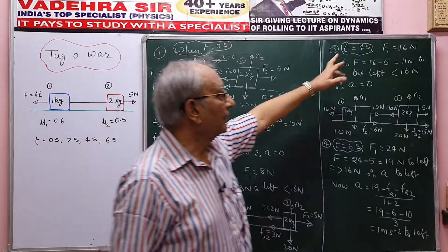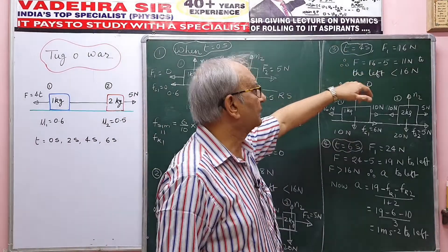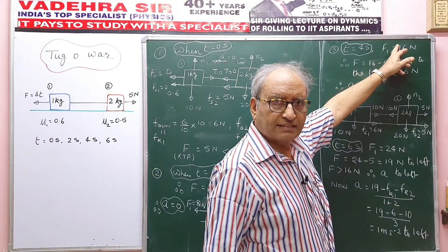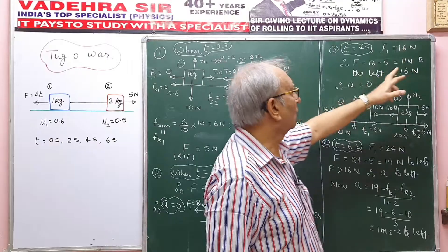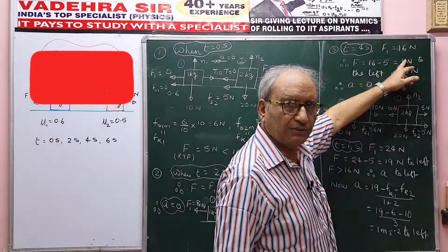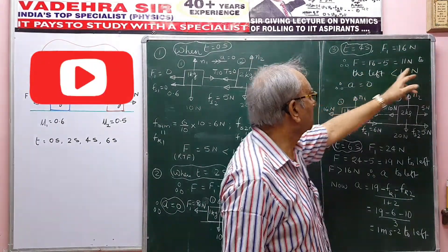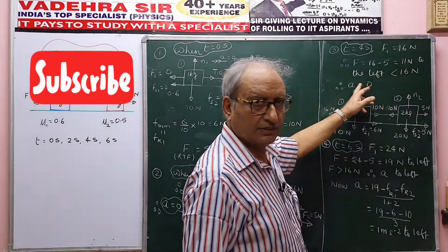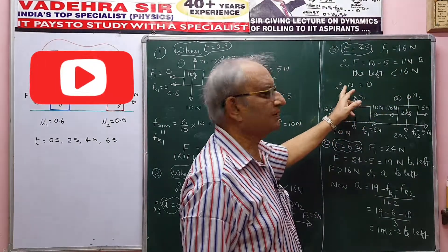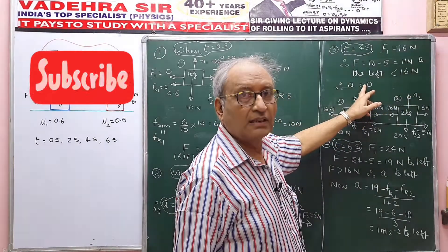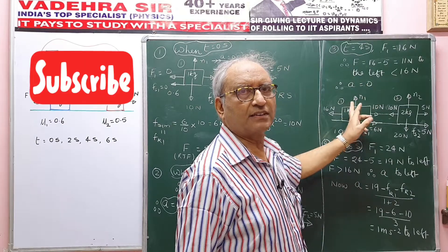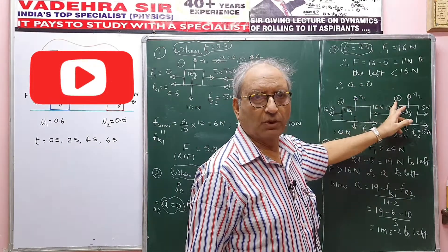When T is 4 seconds, F1 = 16 Newton. The resultant attracting force is 16 − 5 = 11 Newton to the left. But 11 Newton is still less than 16 Newton, so acceleration is 0 again, meaning static friction will act on both blocks.